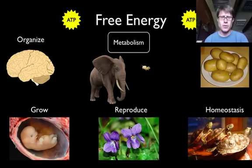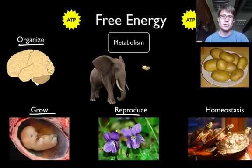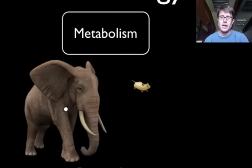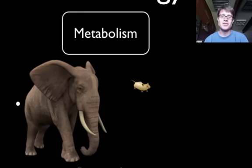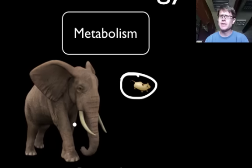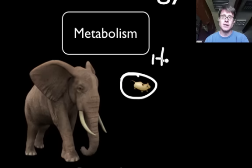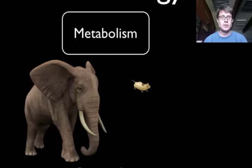What is free energy for? Free energy does three things in living organisms: it allows us to organize, grow, and reproduce. There's also an interesting relationship between metabolism and size. An elephant has a relatively low metabolism, while a mouse has a high metabolism. The reason is that a mouse has a hard time maintaining homeostasis — it loses a lot of energy to heat, so it has to crank up its metabolism to compensate.